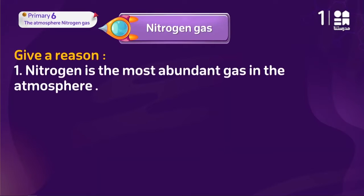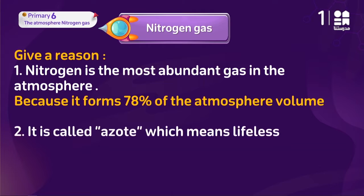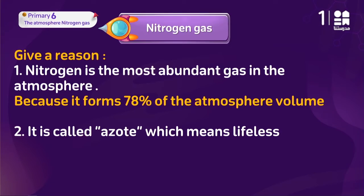Nitrogen is the most abundant gas in the atmosphere. As we have already stated, nitrogen gas makes up 78% of the atmosphere, so it is the most present gas. Although oxygen is very very important for life, nitrogen is found at a higher percentage — 78% — and this number is important.